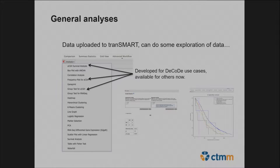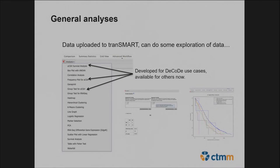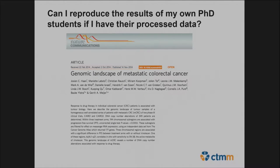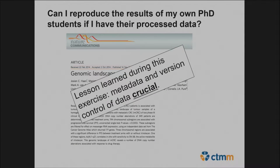Transmart was used as a review and check mechanism — we went back to the original data, checked it, and uploaded. Now with the data in Transmart we can do exploration. Transmart has general analyses including the Fisher exact test and survival analysis, but for the DECODE use case three extra analyses were developed: correlating chromosomal alterations to patient survival, plotting frequency of chromosomal alterations compared to a group label, and testing whether these alterations significantly differ between groups.